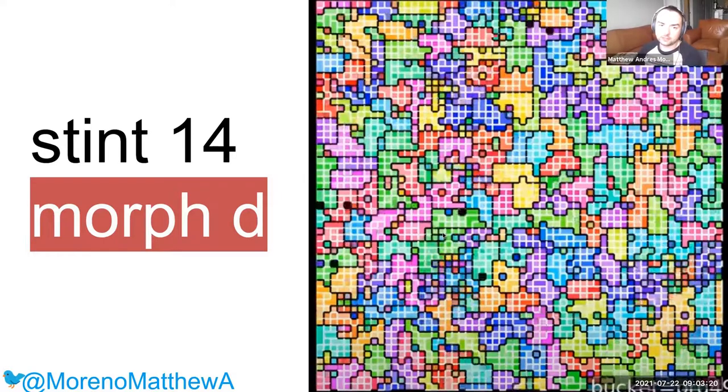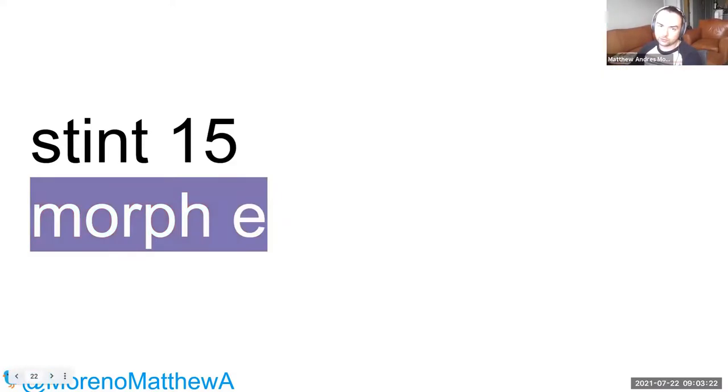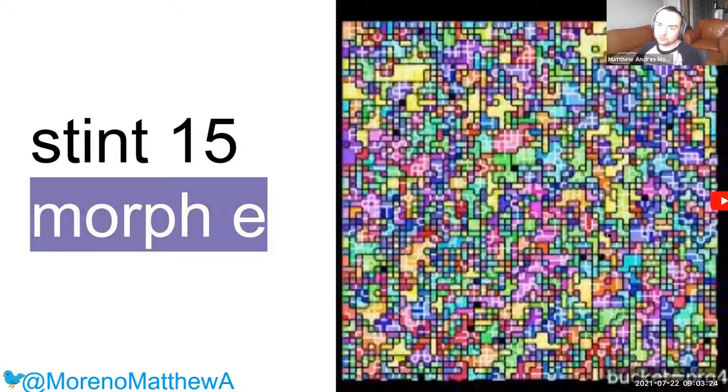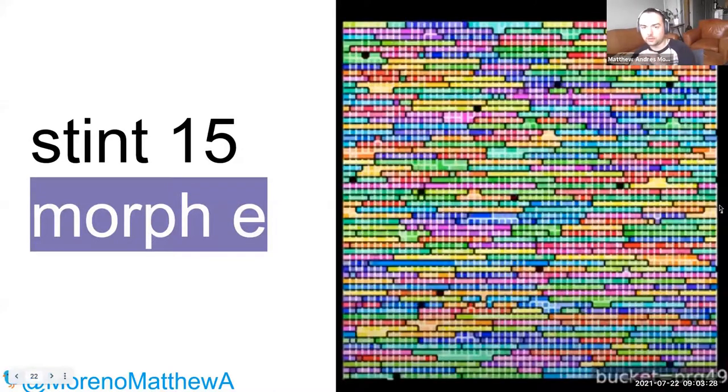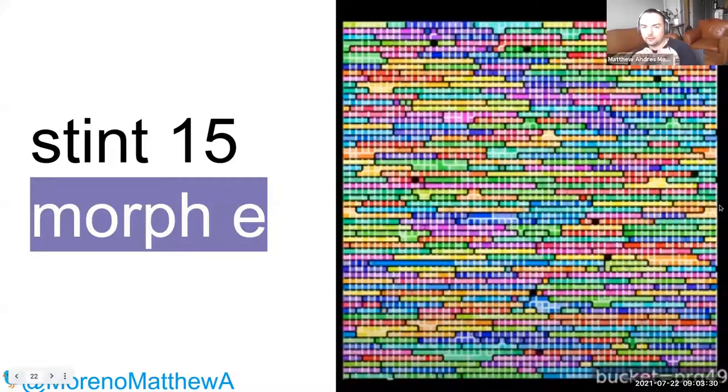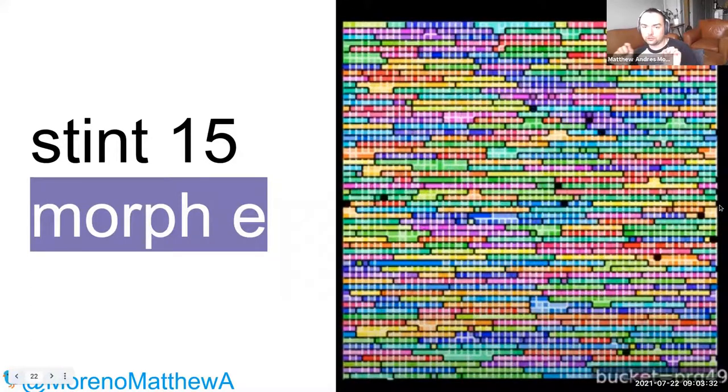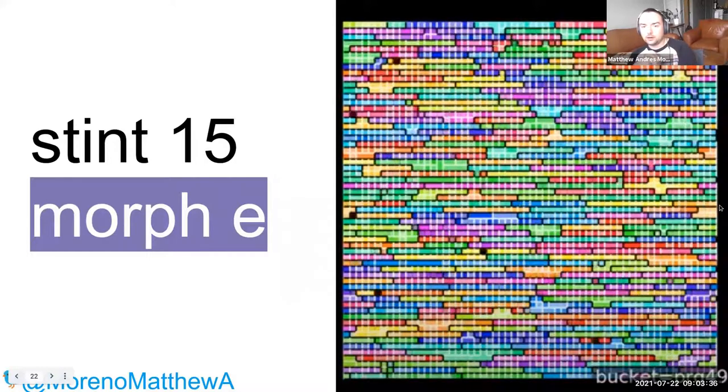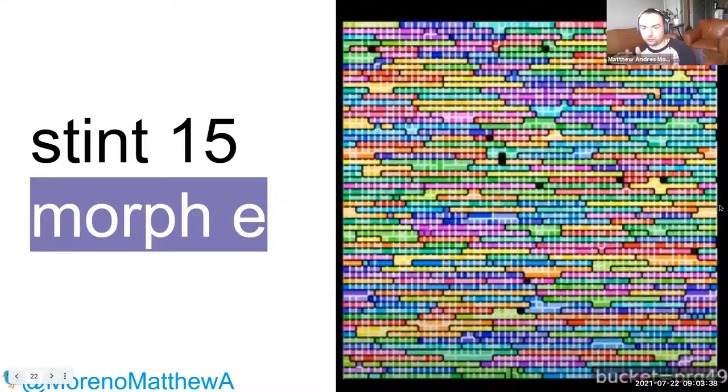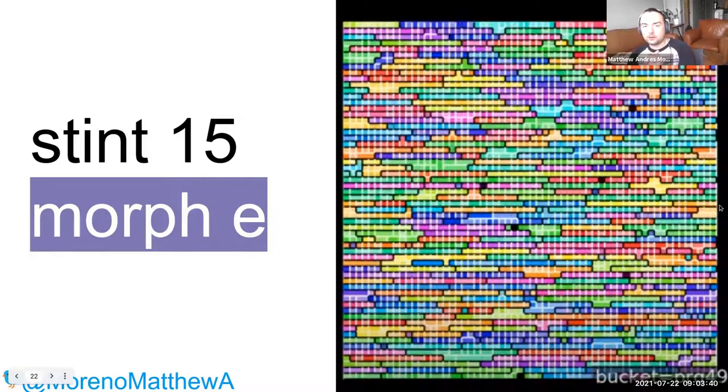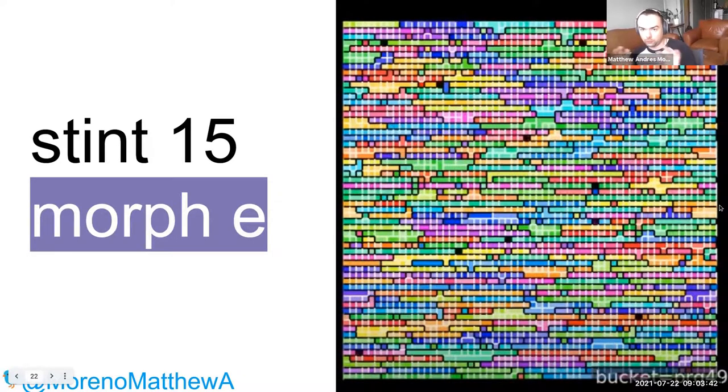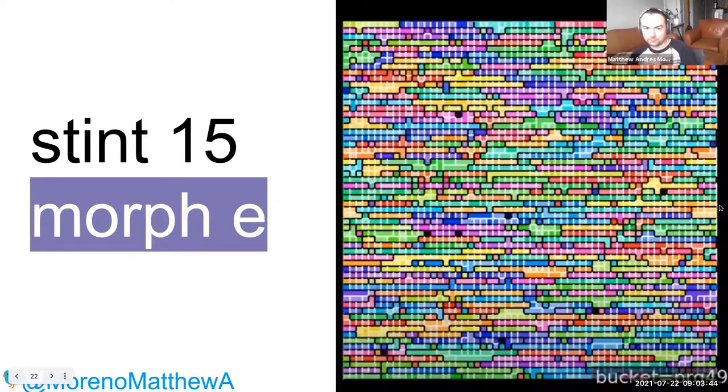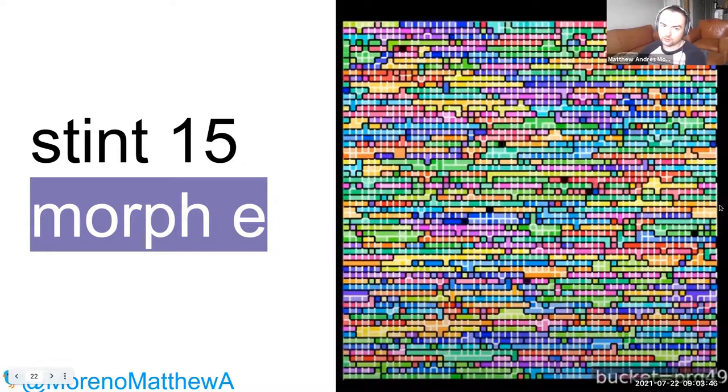At stint 15 along the evolutionary trajectory, we observed a morphological novelty of how these multicellular groups were organizing themselves. They started to form these really long stringy multicellular groupings, preferring to grow their groups out in the left-right direction. We refer to this as morph E.